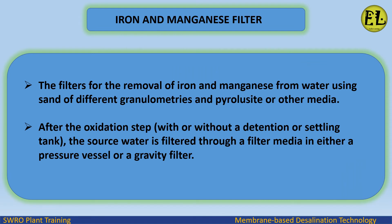Iron and manganese filters use sand of different granulometries and pyrolusite or other media for removal of iron and manganese from water. After the oxidation step, with or without a detention or settling tank, the source water is filtered through a filter media in either a pressure vessel or a gravity filter.